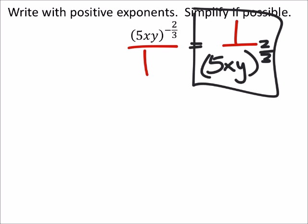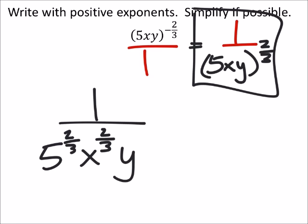I mean, if you want to distribute that 2 thirds in there, that's fine. 1 over 5 to the 2 thirds, x to the 2 thirds, y to the 2 thirds, but why do the extra work, you know.